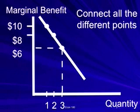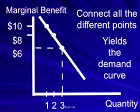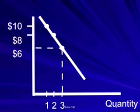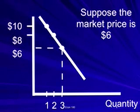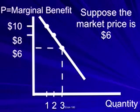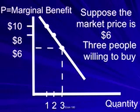The demand curve will show how much will be consumed at different possible prices for a given income and price of substitutes and complements. If the market price is $6, consumption will increase until the marginal benefit — i.e., the willingness to pay — equals the marginal cost, or the price of the product. In this case, three units are consumed.